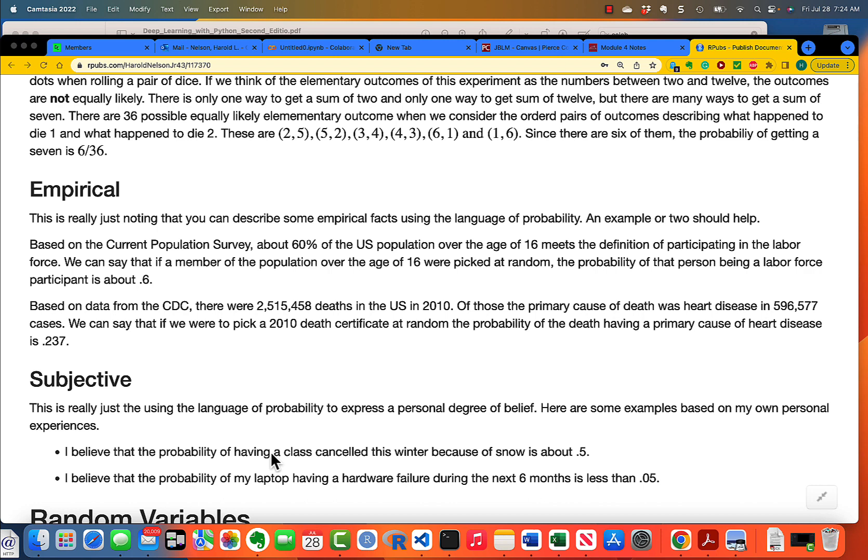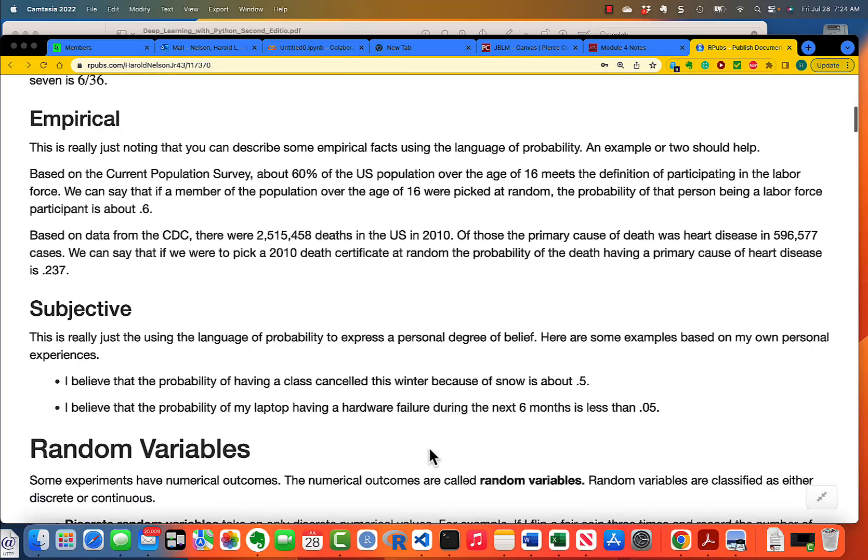We also use the term probability to describe your subjective estimation of something. And I've got a couple examples here. I believe the probability of having a class canceled next winter because of snow is about 0.5. That is, of all the years that I've experienced teaching, about half of the time, I'm going to have at least one snow cancellation.